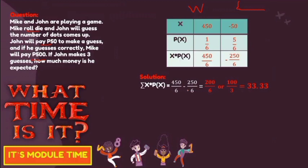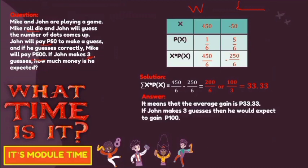So John expects to gain 33 pesos and 33 centavos per guess. Since John makes 3 guesses, multiply 33.33 by 3 to get approximately 100 pesos. The average gain is 33 pesos and 33 centavos per guess; if John makes 3 guesses, he would expect to gain 100 pesos. Thank you senior high school students for watching this video lesson.